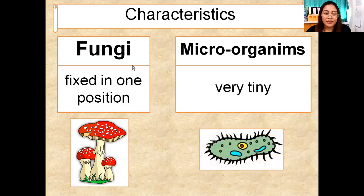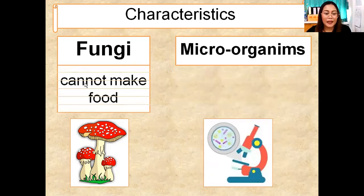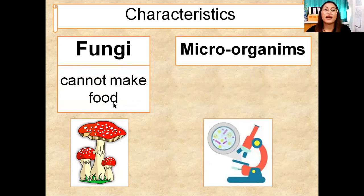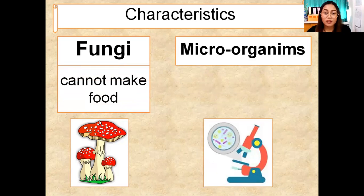Fungi cannot make food — not the same as plants. Plants can make food because they have leaves. Fungi, like mushrooms, don't have leaves, so fungi cannot make food.